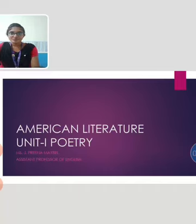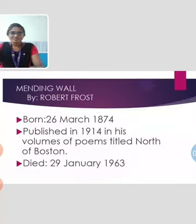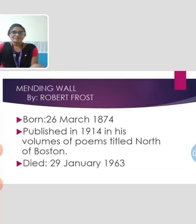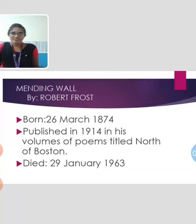The first poem is Mending Wall. It was written by Robert Frost. Robert Lee Frost was born on 26th March 1874. He was one of the most popular 20th century American poets, admired for the blend of colloquial and traditional in his verse. Mending Wall was published in 1914 in his volume of poems titled North of Boston. He died on 29th January 1963.